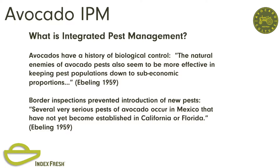I pulled two quotes out of Ebeling's Subtropical Fruit Pests, what we call the bug bible when I was in college. He made an observation that the natural enemies of avocado pests always seem to be under control. He wrote this in 1959, and that's still a true statement with two exceptions: avocado thrips and perseamite. Another observation was that border inspections have prevented the introduction of new pests, with those two previous mentioned introductions. So the border inspections have worked.